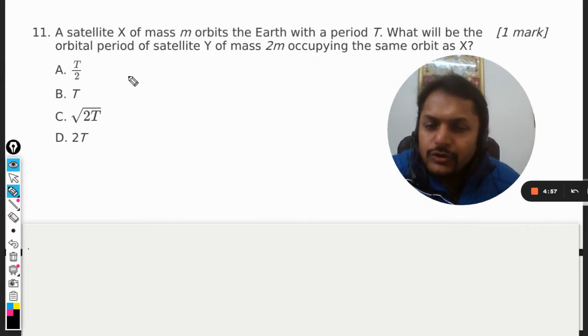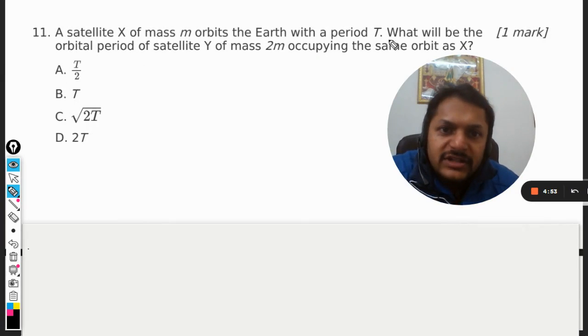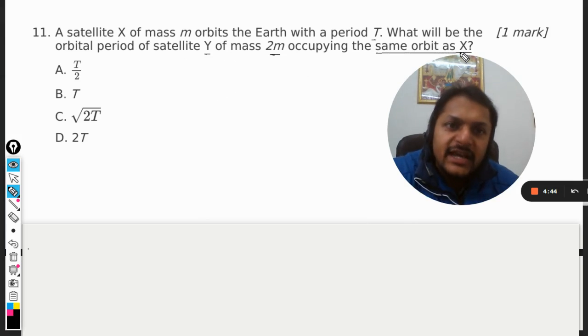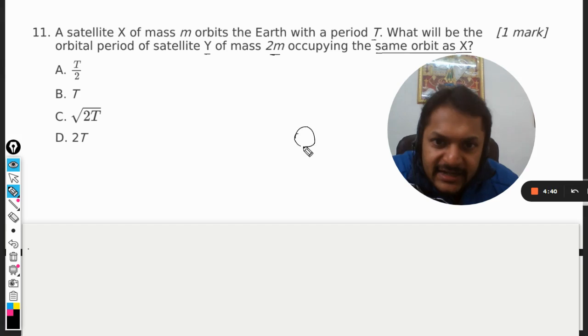Okay dear students, let us see how to do this question. A satellite X of mass m orbits the Earth with a time period capital T. What will be the orbital period of satellite Y of mass 2m occupying the same orbit as X? So the question is that let us say there is this planet and there is an orbit.